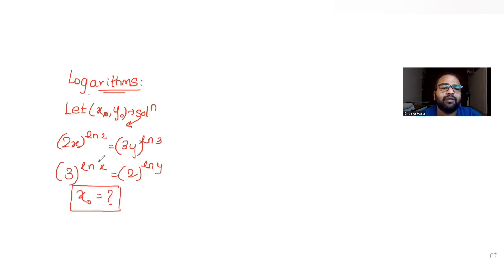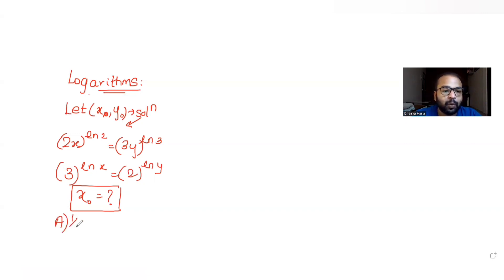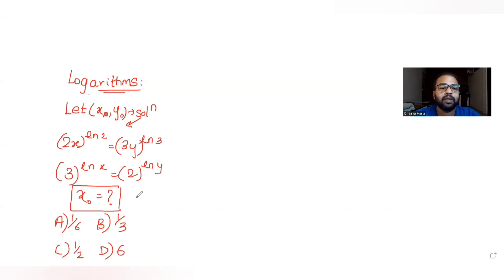We need to find the value of x by solving these two equations. The four options given are: (a) 1/6, (b) 1/3, (c) 1/2, and (d) 6. We have to find the correct answer among these four options.